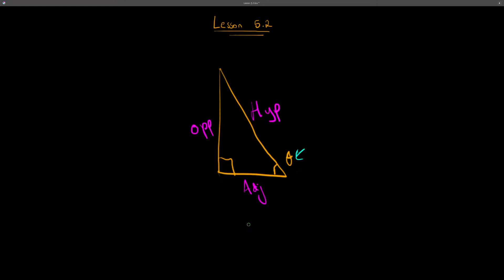For the first part, we're going to be talking about trigonometry. Trigonometry is the study of angles and their sides — so the relationship between them. As you can see, the opposite side of the angle is called the opposite, the adjacent side of this angle is called the adjacent, and the side opposite the 90-degree angle of the right triangle is the hypotenuse.